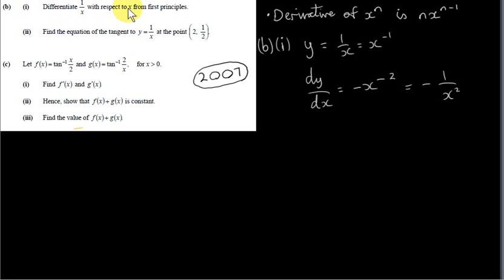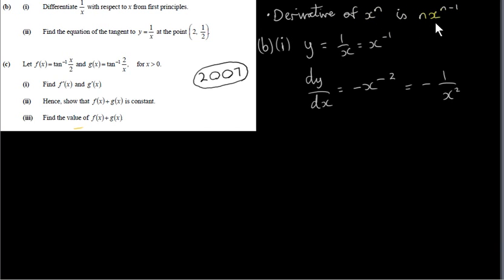We're going to differentiate 1 over x with respect to x from first principles. In an earlier video in this playlist, entitled 'Derivative of x to the power of n', I went through the derivative of x to the power of n from first principles where n is any number, and you'll see that it's nx to the power of n minus 1. First principles was used to prove this result, so you could apply it to the particular function here, which is 1 over x.